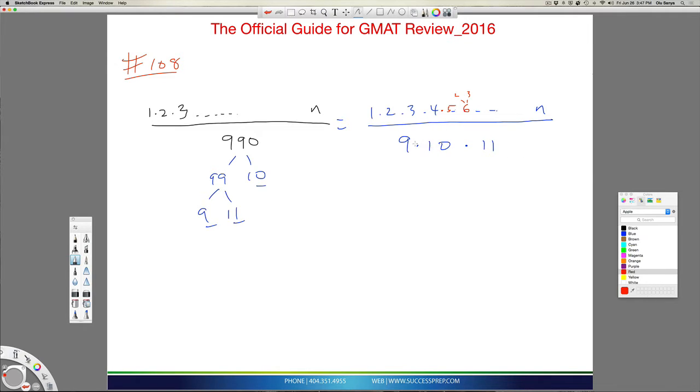For this stuff to be divisible, for 990 to be divisible, which is made up of 9, 10, and 11, you must have, this n must at least go up to 11. It needs to go up to 11, and it asks for the least. So that's the least thing you can have if it's to be divisible.